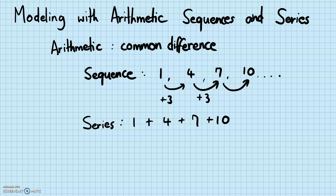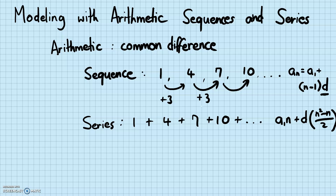To model or solve real-world problems with arithmetic sequences and series, you need a good understanding of their characteristics, and how arithmetic differs from geometric. You also need to remember the nth term formula: a_n = a1 + (n − 1)d, and the sum formula: S = a1·n + d·(n² − n)/2. This derivation was explained in a previous video.